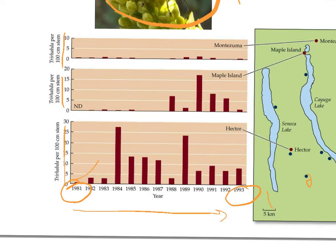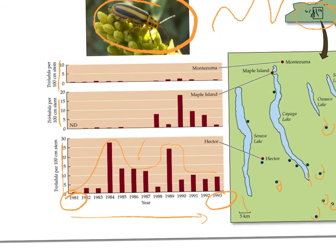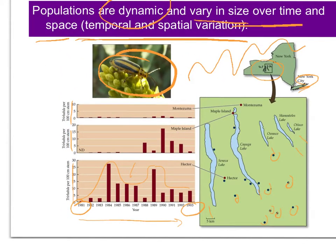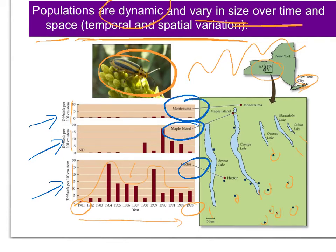If we just look at one site for a minute, we see the population goes up, kind of goes down, goes up again, goes down. The same thing is true for the other areas. We see this variation in both time and space. By spatial variation, I'm talking about differences between the three different study sites: Hector, Maple Island, and Montezuma. They're quite different — we see a lot more of these beetles in Hector, although after 1989, in Maple Island, they peak and are even higher than in Hector. This spatial and temporal variation is really quite common for populations.